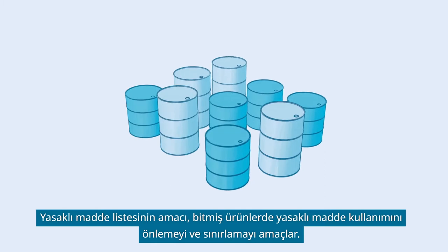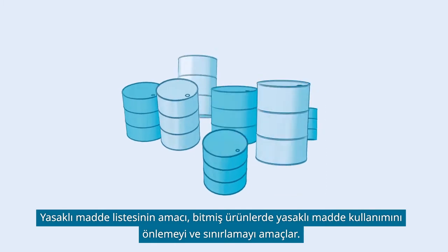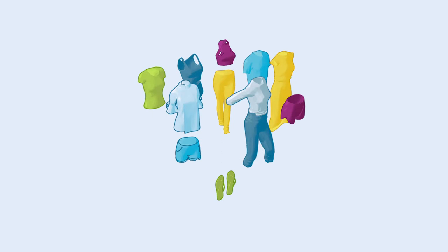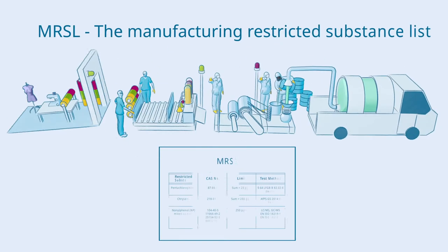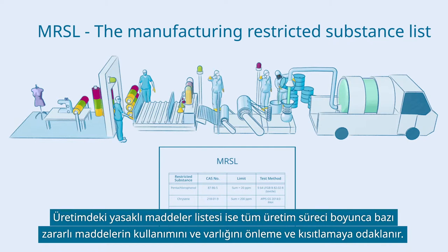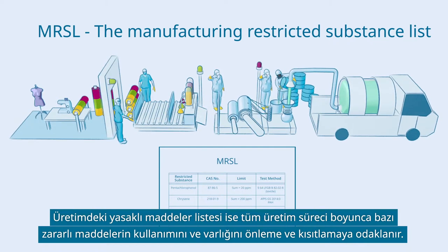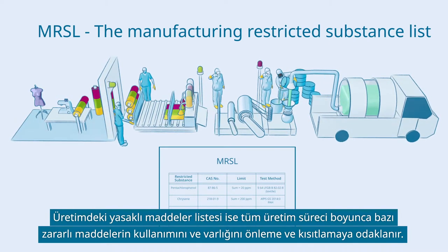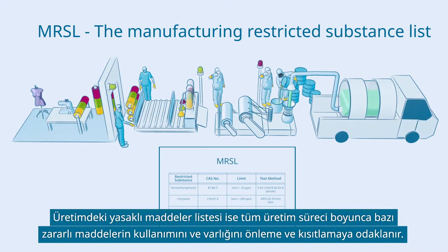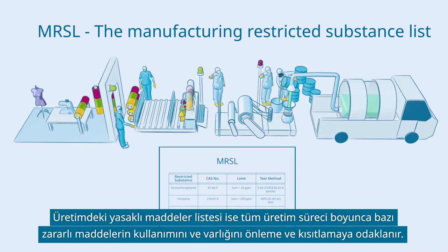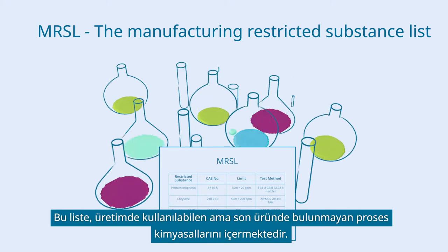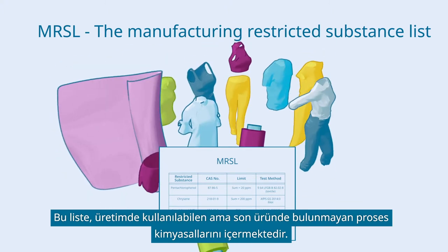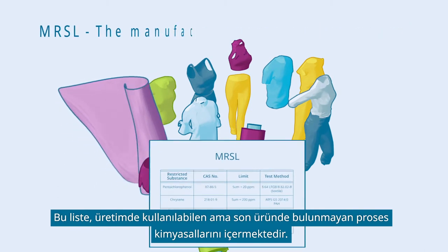The restricted substance list aims to prevent and limit the use of restricted substances in finished products. The manufacturing restricted substance list focuses on preventing and restricting the usage and presence of specific hazardous substances throughout the entire manufacturing process. This list includes processed chemicals which may be used in manufacturing but are not present in the end product.